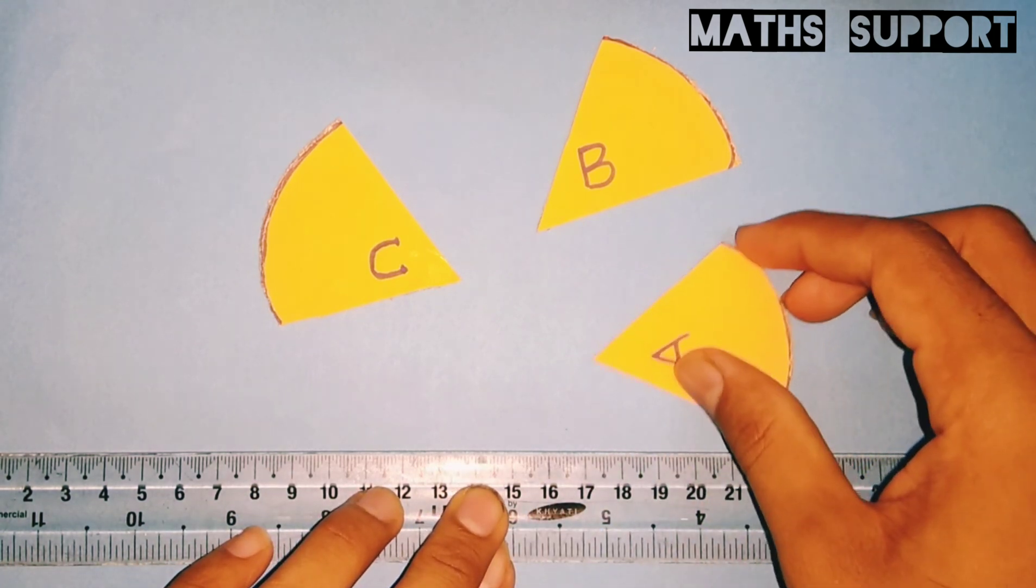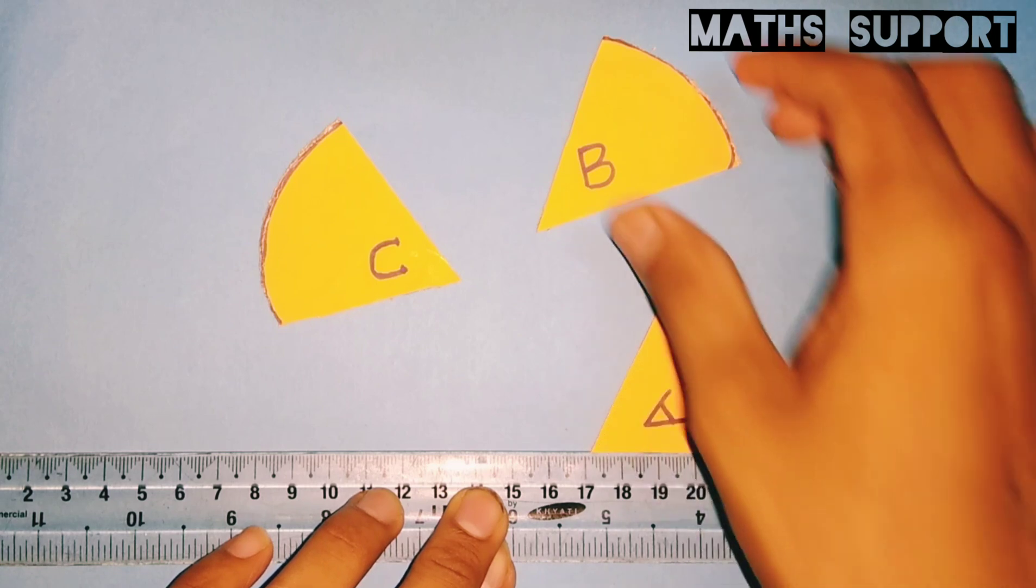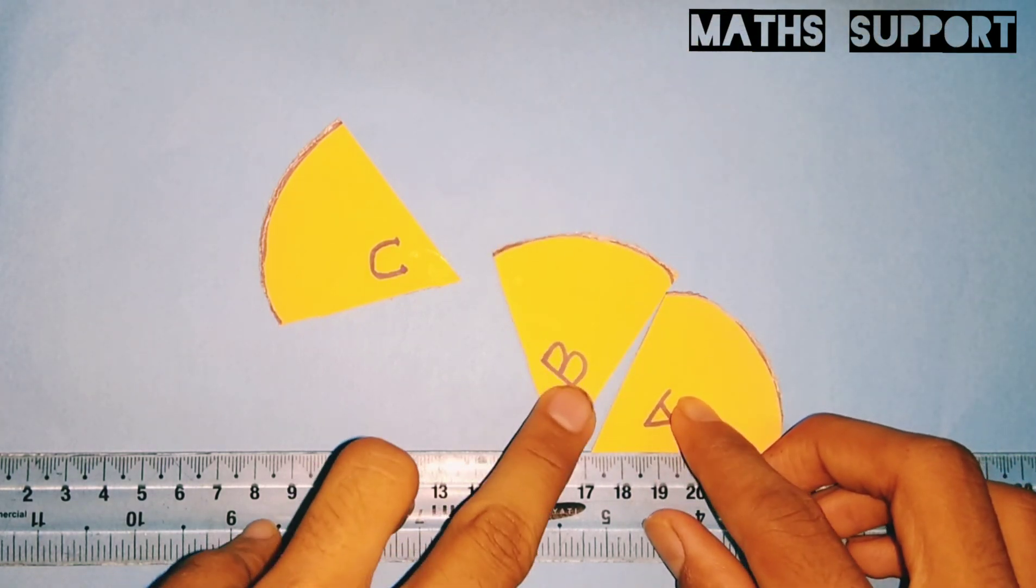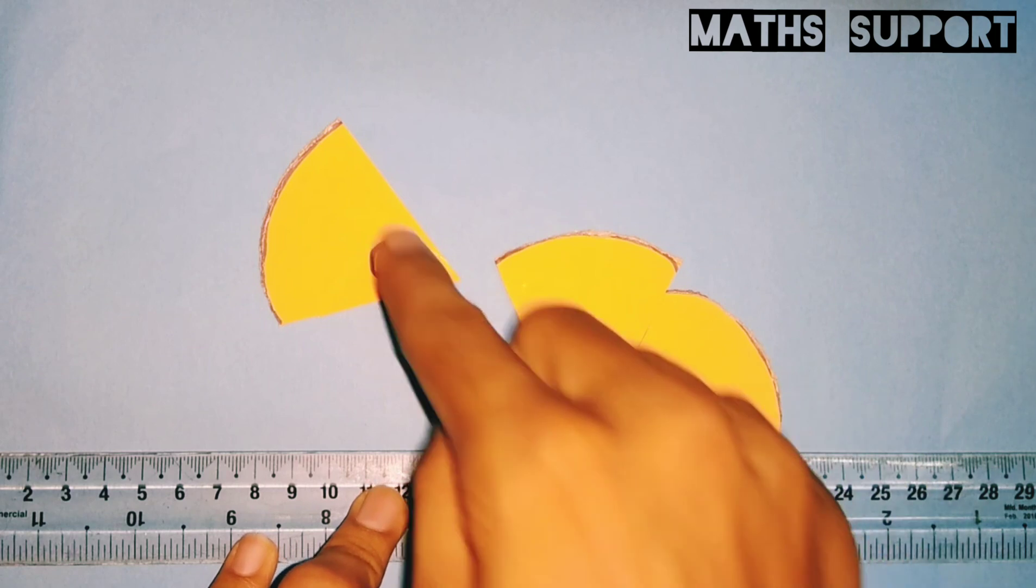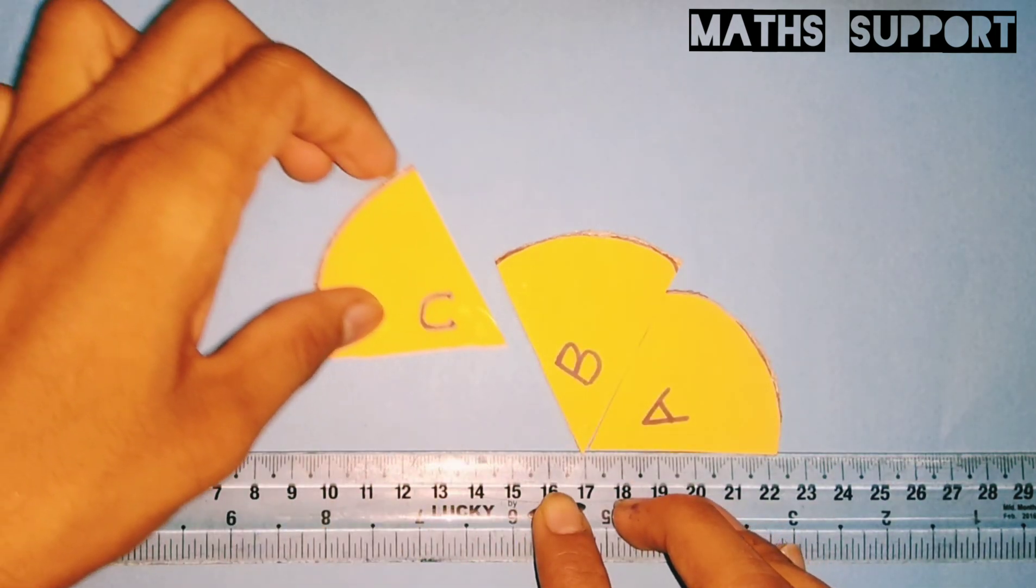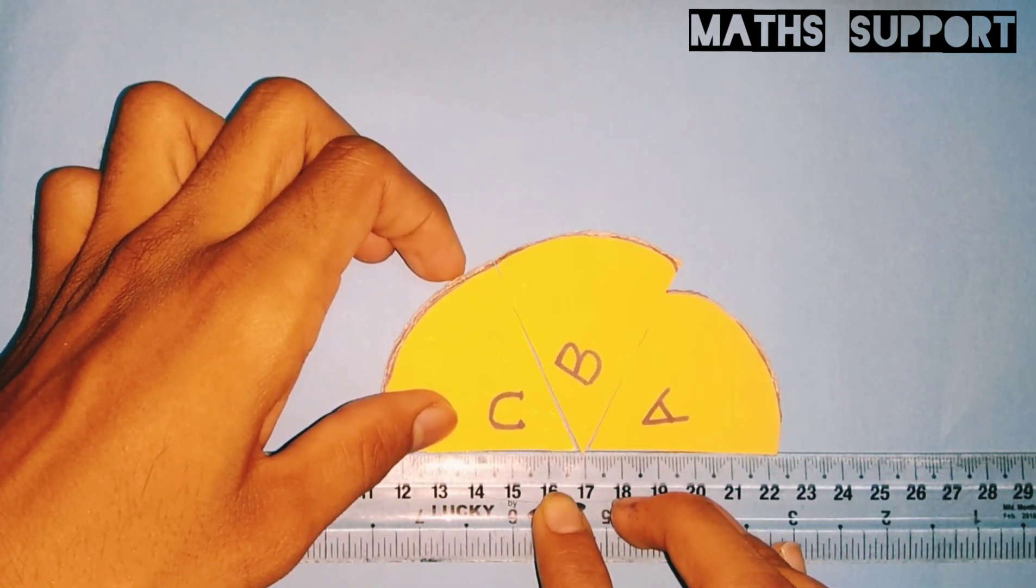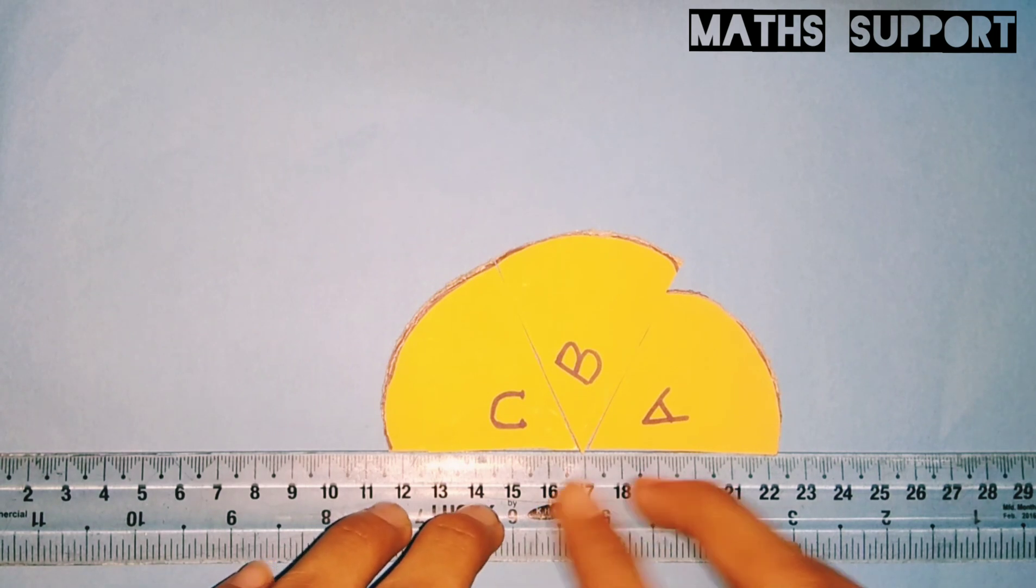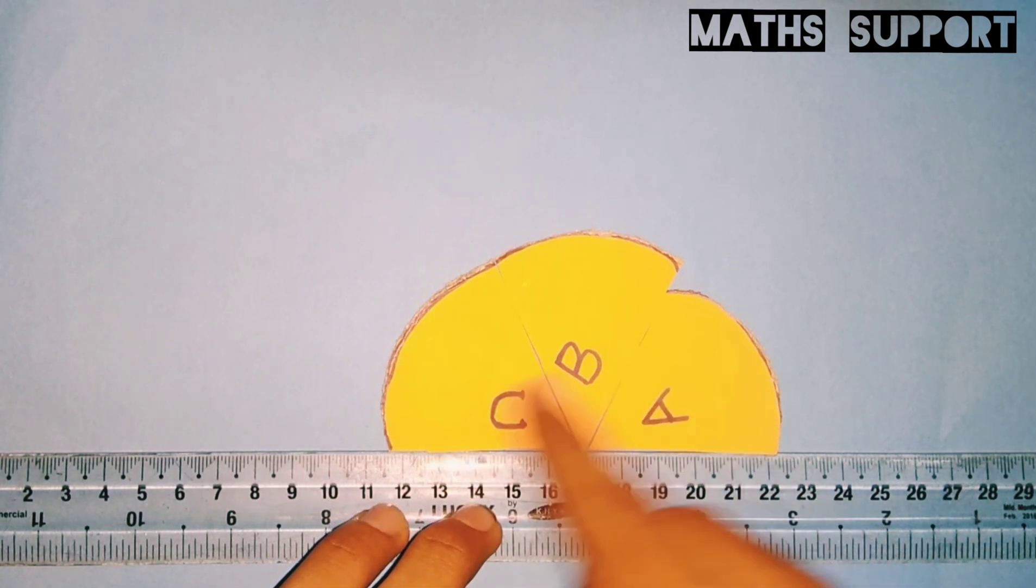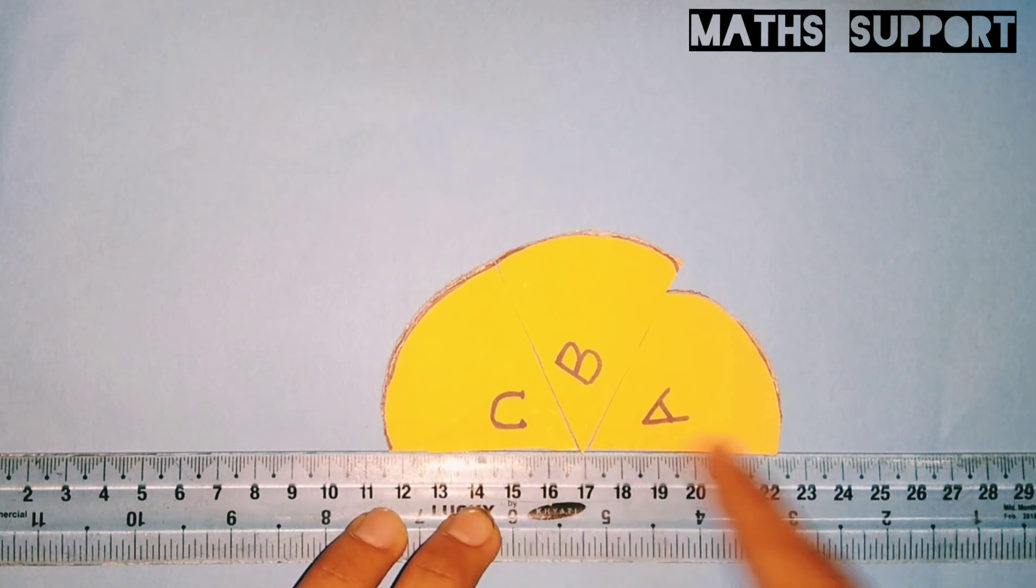So I am putting this angle A, then angle B, and angle C. Yeah, so over here it's creating a straight line. You can see that if I am combining these three angles, by this scale, you can see it's a straight line.